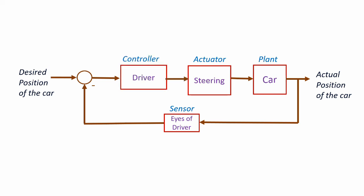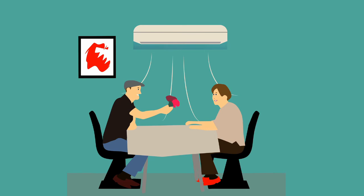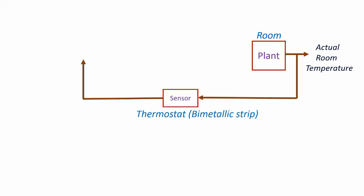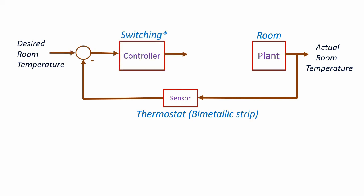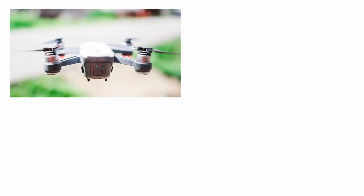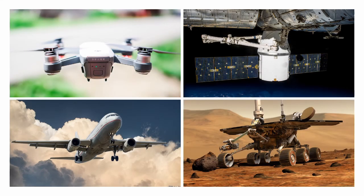Another example is the air conditioner in our room. The temperature of the room is being automatically controlled by the air conditioner. The plant is the room itself and the variable to be controlled is room temperature. The room temperature is sensed with the help of a thermostat, compared with the desired room temperature, and based on that the compressor of the air conditioner is controlled by the controller, thus maintaining the room temperature. Other examples of closed loop systems are quadcopters, spacecraft, aeroplanes, robotics, etc.